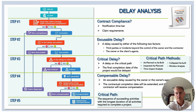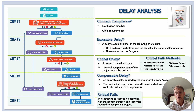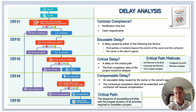If the contract is in compliance, one moves on to step two — excusability — determining whether this delay event is excusable. Excusable delay is a delay caused by third parties or incidents beyond the control of both the owner and the contractor, or something caused directly by the owner or the owner's agents. The contract would also give guidance on what qualifies as an excusable delay.